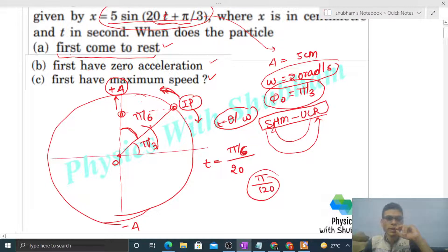Now let's check when it first has zero acceleration. Zero acceleration occurs at the mean position. So this projection will reach mean position when this particle, moving this way, reaches here. At that time the projection will come back to mean position. So how much angle must this particle cover? This is π/6 and this angle is π/2.